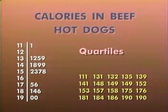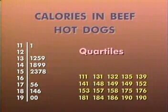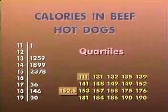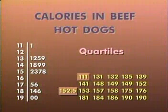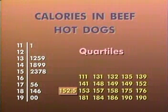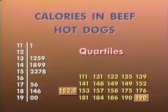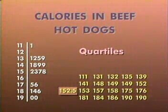The quartiles are found in a way similar to that used to find the median. The one-quarter point should be the center of the observations between the minimum value and the median, so we find the median of this part of the distribution — that'll be the first quartile. Doing the same thing for the upper half of the distribution gives us the third quartile. The second quartile, by the way, is the median itself.